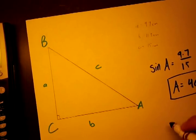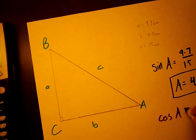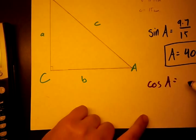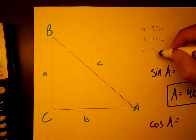Let's do a check with our cosine function. Cosine of A equals adjacent over hypotenuse. So that's going to be B over C, or in this case, 11.5 over 15.